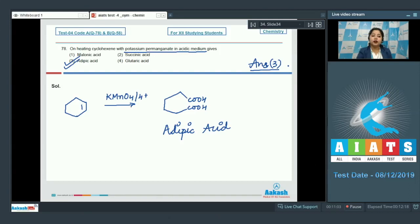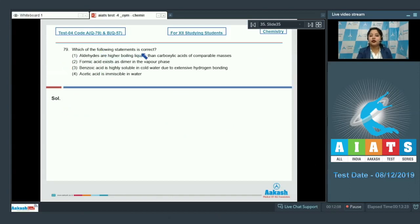Moving to next question, which is 79. Which of the following statements is correct? Here we are given with 4 statements and we have to identify which among the following is a correct statement. Let's start the first statement. Aldehydes are higher boiling liquids than carboxylic acids of comparable masses. This is an incorrect statement. As we all know that carboxylic acids have higher boiling points because of intermolecular hydrogen bonding. On the other hand, the boiling points of aldehydes are lower because in aldehydes, there exists dipole-dipole interaction.